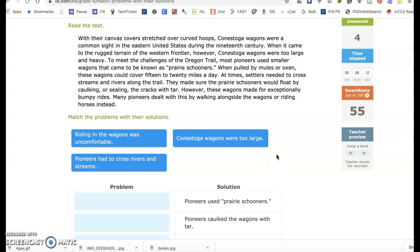With their canvas covers stretched over curved hoops, Conestoga wagons were a common sight in the eastern United States during the 19th century. When it came to the rugged terrain of the western frontier, however, Conestoga wagons were too large and heavy. To meet the challenges of the Oregon Trail, most pioneers used smaller wagons that came to be known as prairie schooners. When pulled by mules or oxen, these wagons could cover 15 to 20 miles a day. At times, settlers needed to cross streams and rivers along the trail. They made sure the prairie schooners would float by caulking or sealing the cracks with tar. However, these wagons made for exceptionally bumpy rides. Many pioneers dealt with this by walking alongside the wagons or riding horses instead.